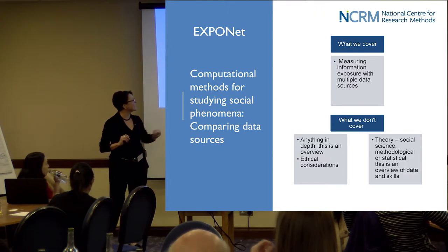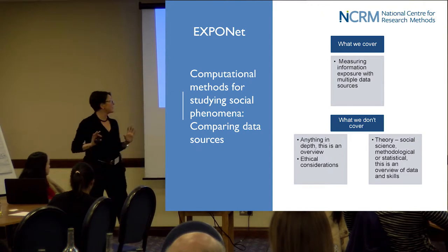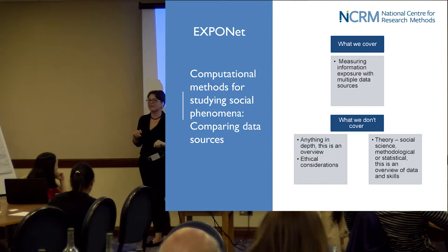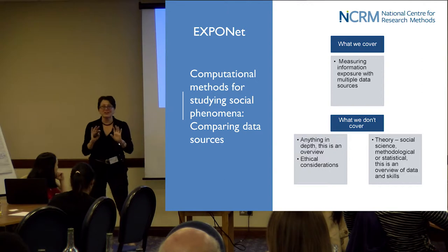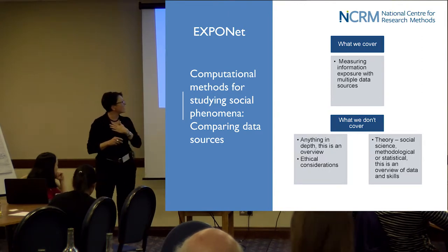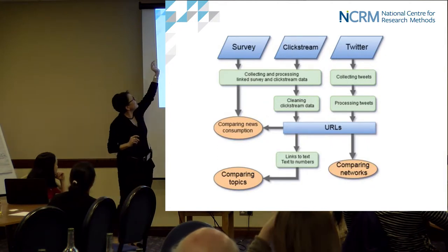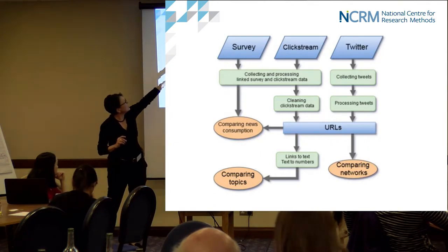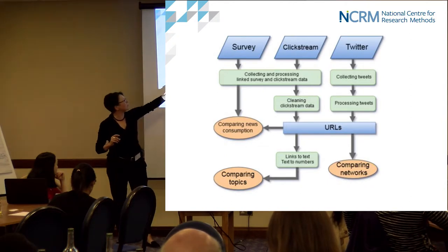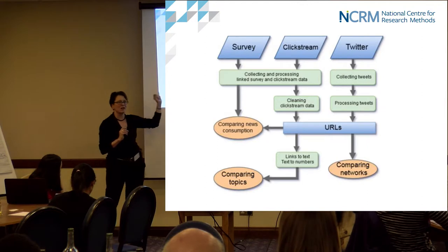What we won't cover — though it was covered previously — are ethical considerations around social media data. We're also not going to cover theory in depth: not social science theory, methodological theory, or statistical theory. This is an overview about data and the skills needed to process and analyze it. The flowchart we're using has blue boxes for data sources, green boxes for processing those sources, and orange circles for results or outputs from the analysis.